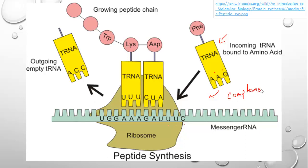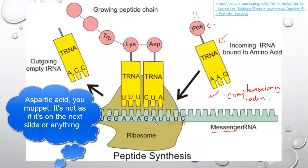That means wherever you get UUC on messenger RNA, you will always get this tRNA with anticodon AAG, and therefore always phenylalanine. So if you want phenylalanine at a particular point in your protein, you make sure you have UUC on your mRNA. Similarly, wherever you get AAG, you'll always get aspartic acid, and wherever you get UUC, it'll always be phenylalanine.